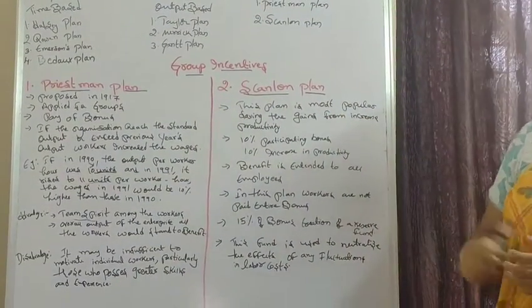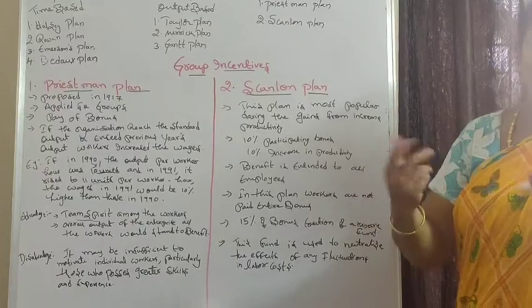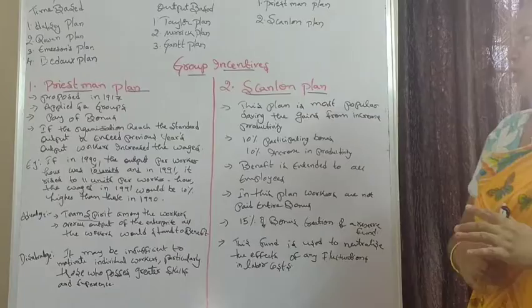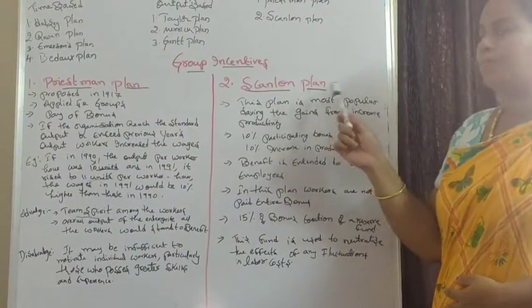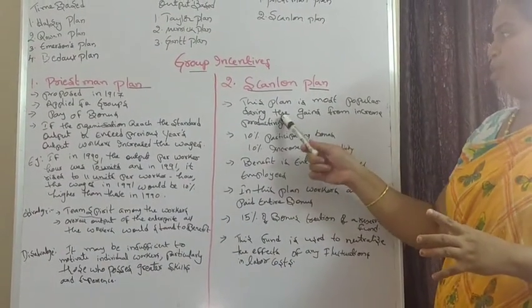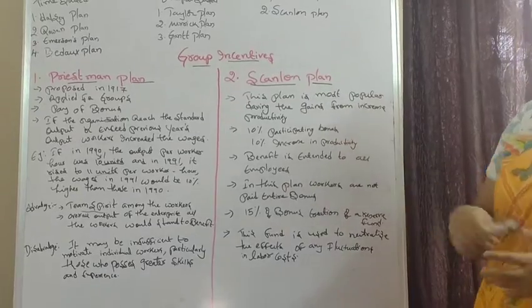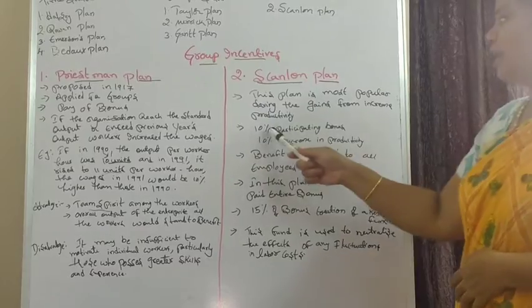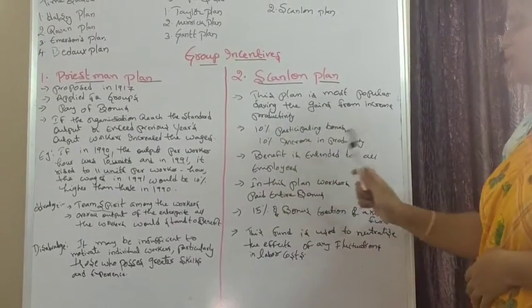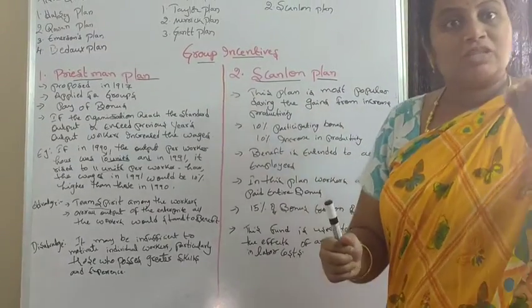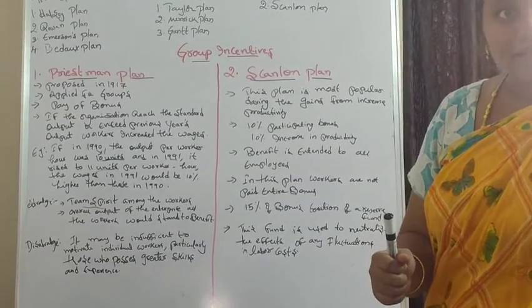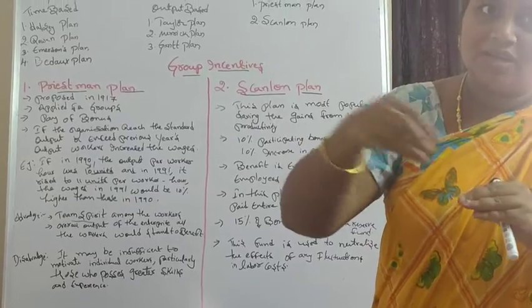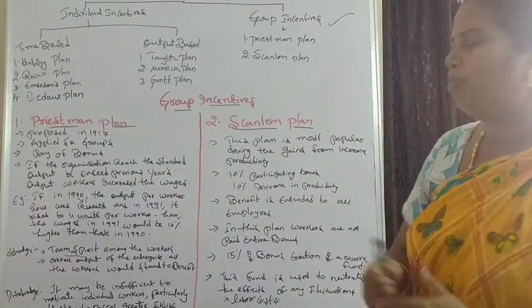Now the Scallon Plan. This is also a group incentive plan and is the most popular. It works by saving the gains from increased productivity. If a worker increases production by 10%, they receive a participating bonus. Working properly within a group also earns a bonus.